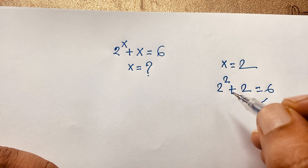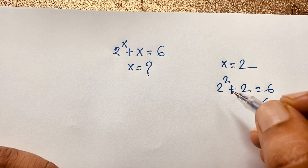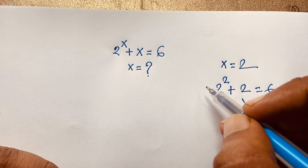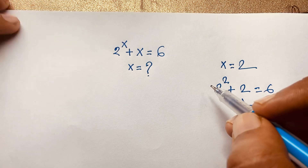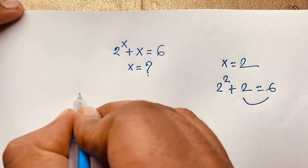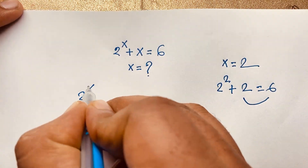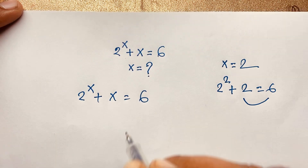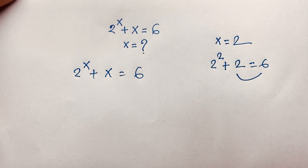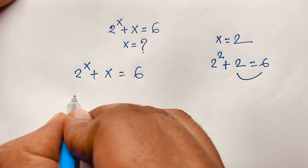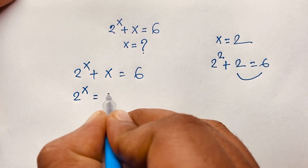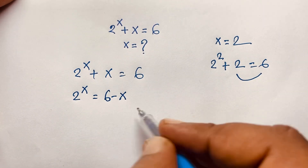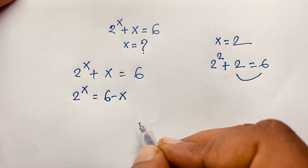But how to solve this question formally? Here is 2 to the power x plus x is equal to 6. Let's start the solution. We rearrange: 2 to the power x is equal to 6 minus x. I just move this x to the other side, so it becomes negative x.